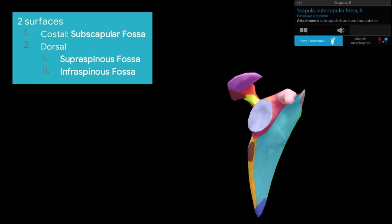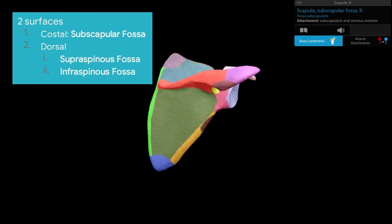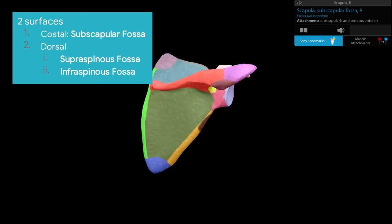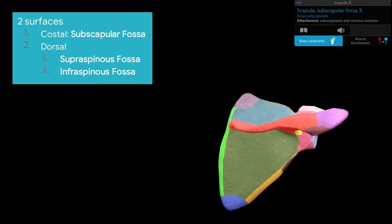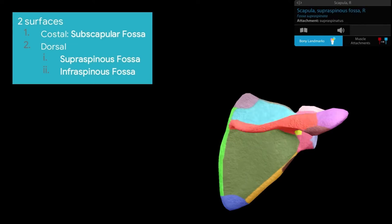The dorsal surface is further divided by the spine of the scapula into the supraspinous fossa, which lies above it, and the infraspinous fossa, which lies below.